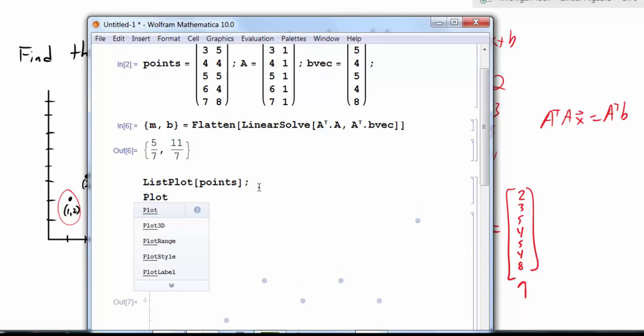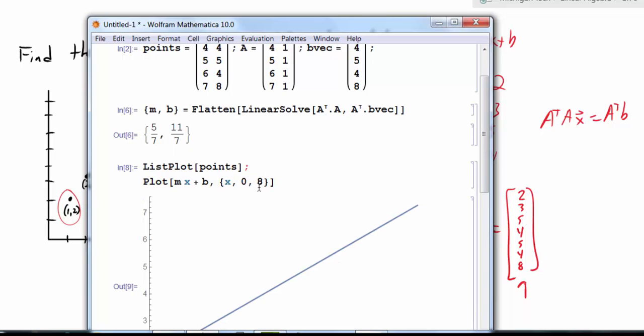Next, I want to look at a regular plot. And I want to plot my mx plus b for these m and b values that I've calculated using my least squares technique. And I want to plot this line from x equals 0 to 8. Now I have my line.